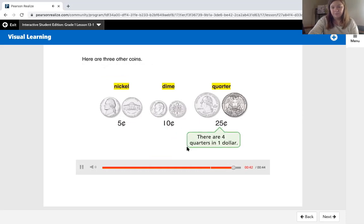There are four quarters in one dollar. So the vocabulary that we learned during this video were penny, nickel, dime, quarter. There are 100 pennies in a dollar, 20 nickels in a dollar, 10 dimes in a dollar, and four quarters in a dollar.